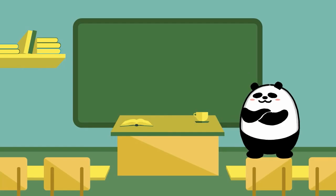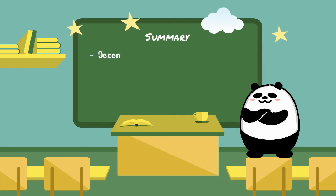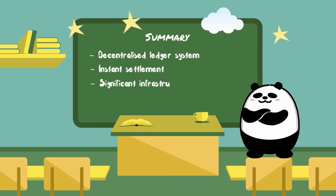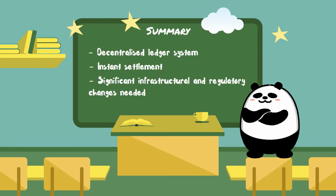In summary, blockchain is a decentralized ledger system where every computer holds a copy of the entire transaction history. It allows instant settlement, eliminates the need for a central authority to oversee transactions, and is extremely secure. Significant regulatory and infrastructural changes are needed for it to be widely adopted.